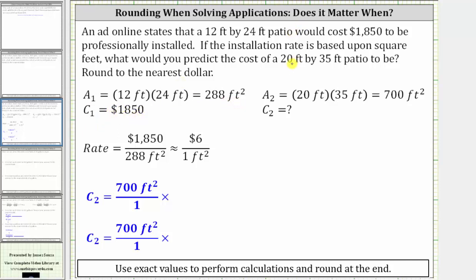The second patio has dimensions 20 feet by 35 feet, and therefore the area, which we will call A sub 2, is equal to 20 feet times 35 feet, which is equal to 700 square feet. And the cost of this patio, C sub 2, is unknown.